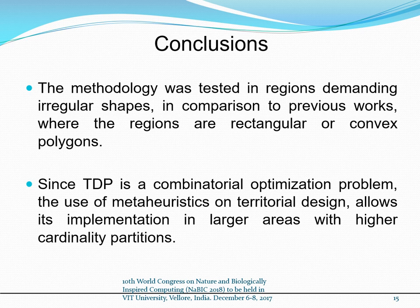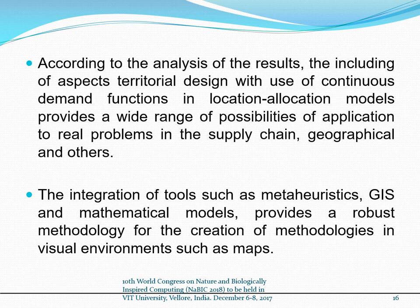Conclusions. The methodology was tested in regions with irregular shapes, in comparison to previous works where the regions are rectangular or convex polygons. Since the territorial design problem is a combinatorial optimization problem, the use of metaheuristics on territorial designs allows implementation in larger areas with higher cardinality partitions. The inclusion of territorial design aspects with continuous demand functions in location allocation models provides a wide range of application possibilities to real problems in the supply chain, geographical contexts, and others. The integration of tools such as metaheuristics, geographic information systems, and mathematical models provides a robust methodology for the creation of methodologies in visual environments such as maps.